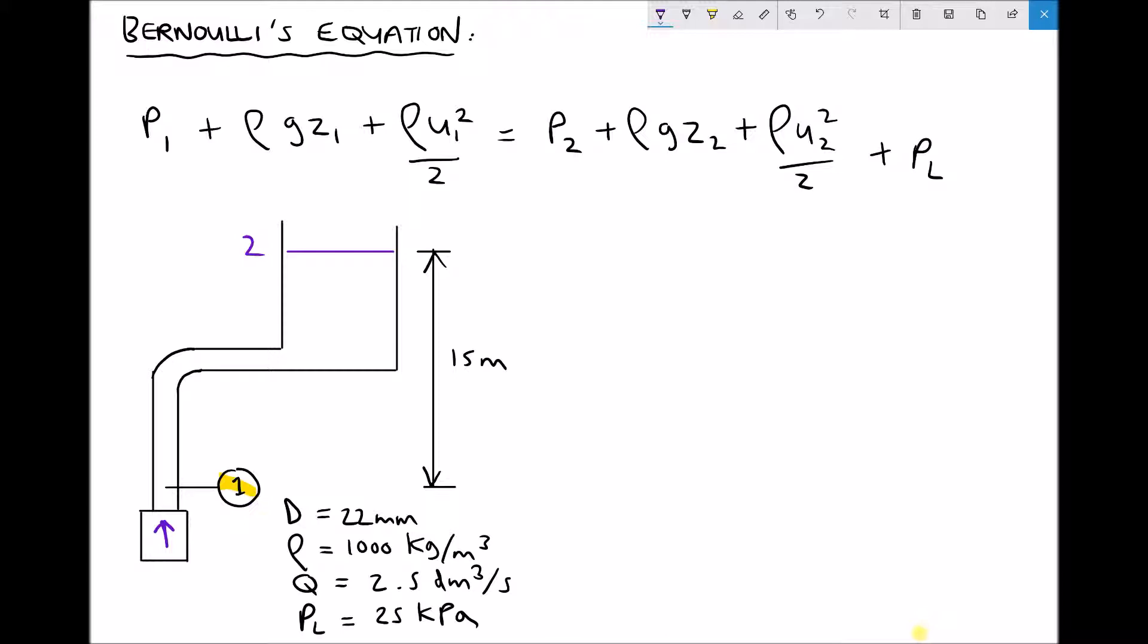Our second term then rho g z1, z1 or the elevation at position 1 is actually going to be 0 and the reason it's going to be 0 is because we're using that lower position as our datum. There's no vertical elevation from that point. So referring back to our Bernoulli's equation we're going to just disregard that term in the equation. If z1 is 0 then the value of that term is going to be 0.